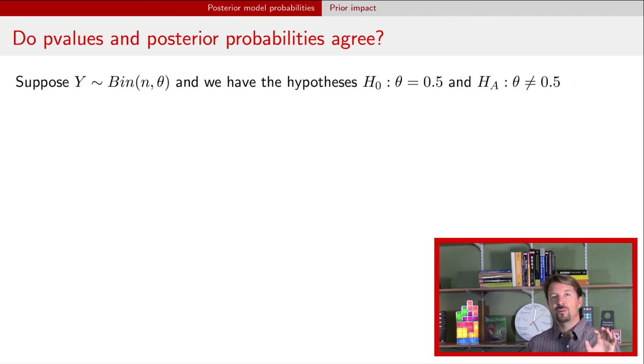So I'm going to do this through an example. The question really is, do p-values and Bayesian posterior model probabilities agree? Here's an example. We have a binomial model. Our hypothesis is that the probability of success is 0.5. Our alternative says that it's not 0.5, it's just something else.